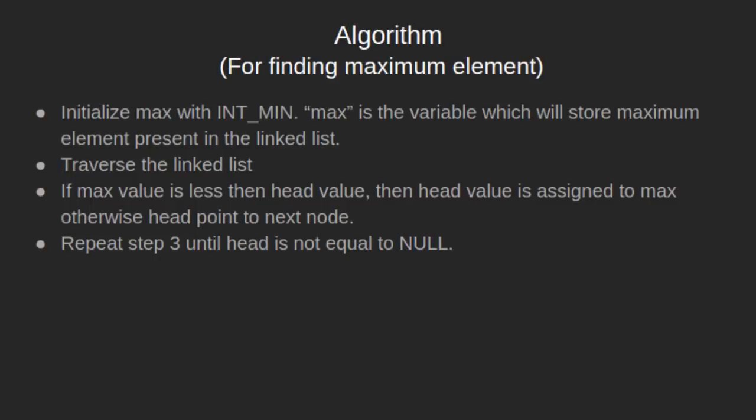Let's see the algorithm to find the maximum element. We initialize max with INT_MIN — max is the variable that will store the maximum element in the linked list. We traverse the given linked list and if the max value is less than the head value, then the head value is assigned to max, otherwise head points to the next node. We repeat this step until head is not equal to null.